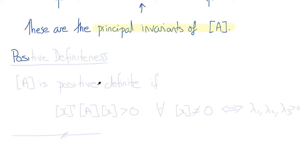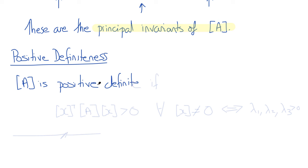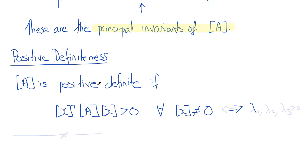Finally, let's review positive definiteness. The matrix A is positive definite if x^T·A·x > 0 for all x ≠ 0, which implies that all eigenvalues λ1, λ2, and λ3 are greater than zero. Equivalently, if λ1, λ2, and λ3 are all greater than zero, then A is positive definite. That's a good place to stop for today.